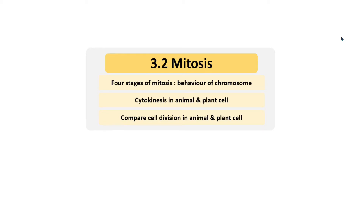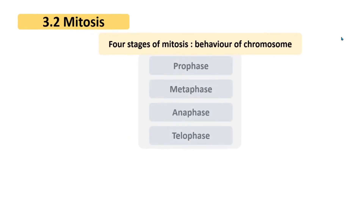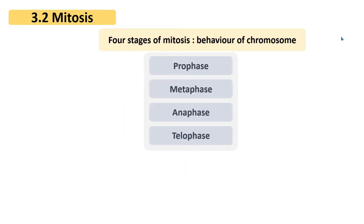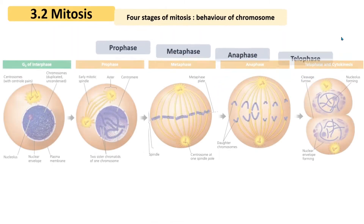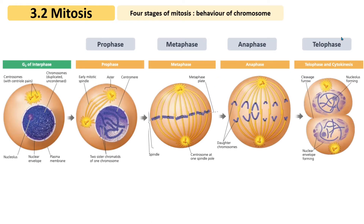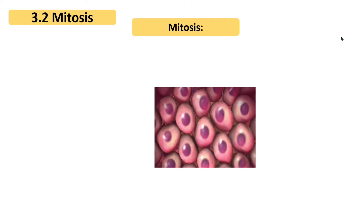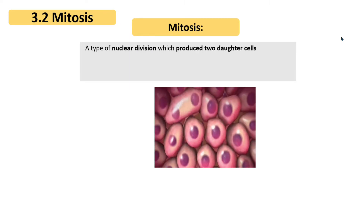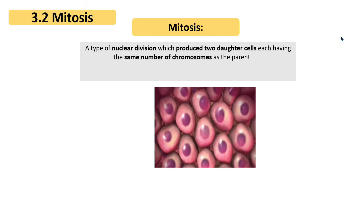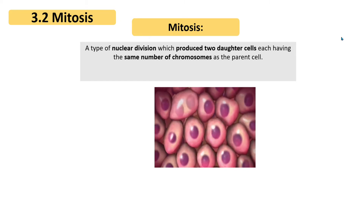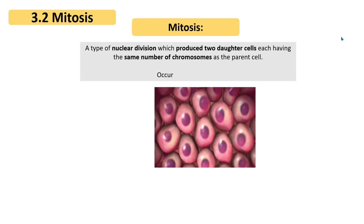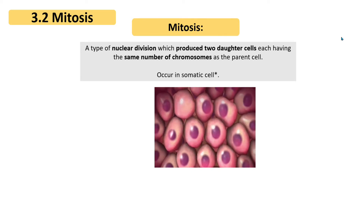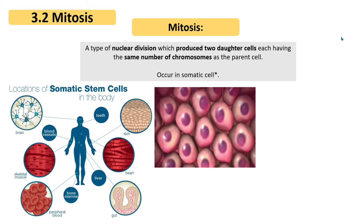In this video, you will learn about the behavior of chromosomes in the four stages of mitosis: prophase, metaphase, anaphase, and telophase. Let's start with the definition of mitosis. Mitosis is a type of nuclear division which produces two daughter cells, each having the same number of chromosomes as the parent cell. This process occurs in somatic cells. A somatic cell is any cell of a living organism other than the reproductive cell.